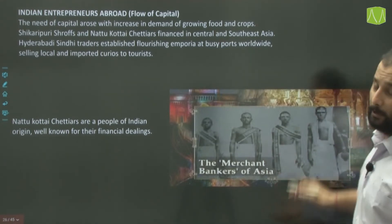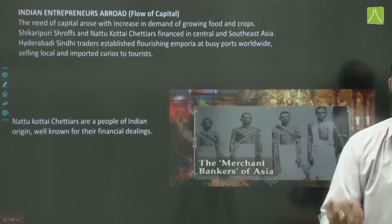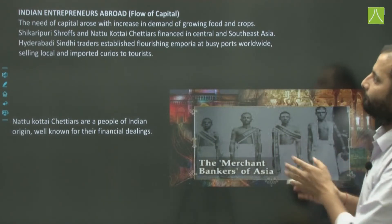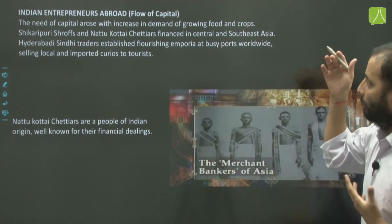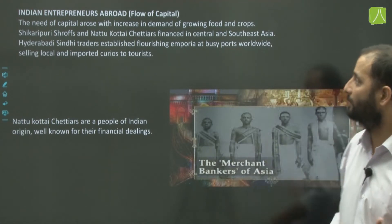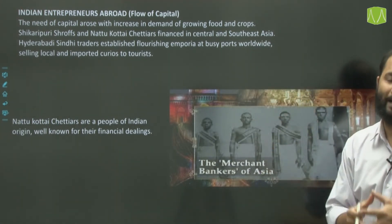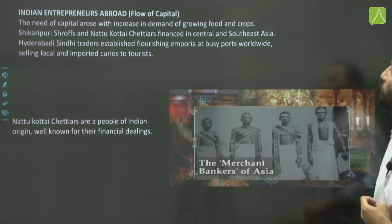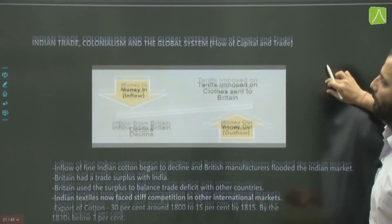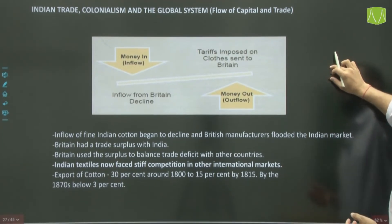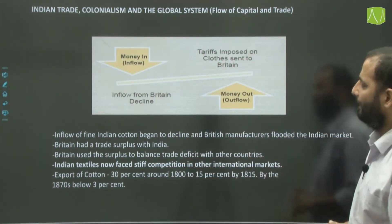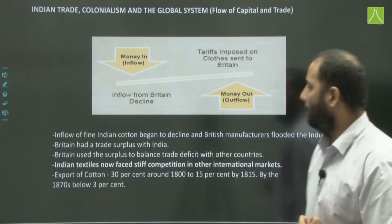Indian entrepreneurs abroad also contributed to the flow of capital. Shikaripuri shroffs and Natukottai Chettiars were among those financing trade in central and southeast Asia. Sindhi traders from Hyderabad established emporiums at emerging port towns and busy ports worldwide, selling local and imported curios to tourists. Regarding Indian trade, colonialism, and the global system: the inflow of fine Indian cotton began to decline as India was being colonized and industrialization happened in Britain.